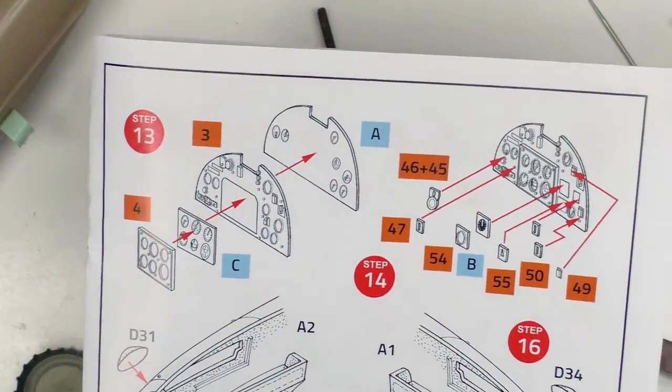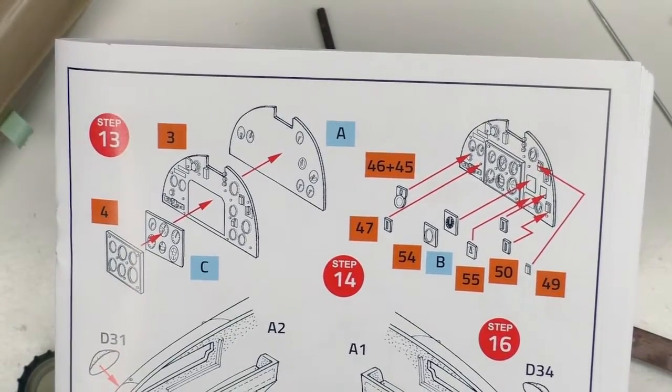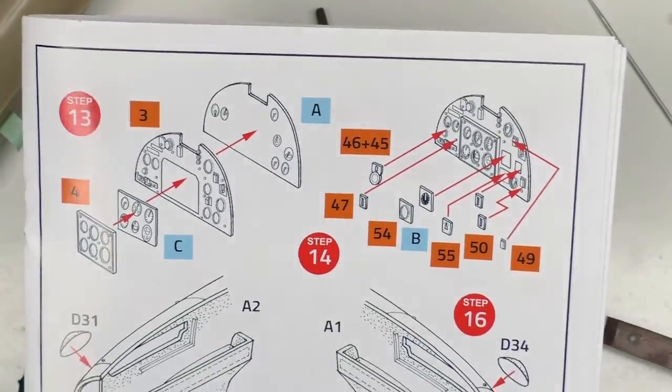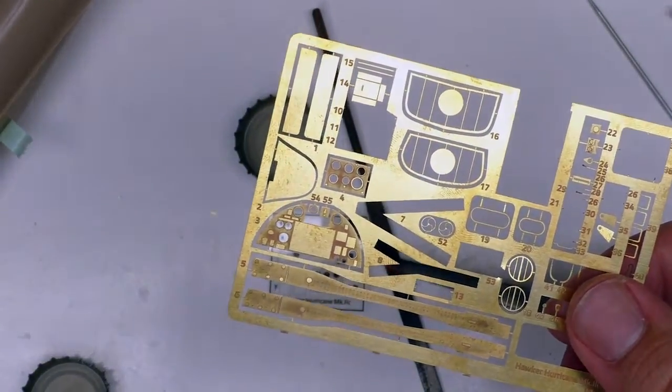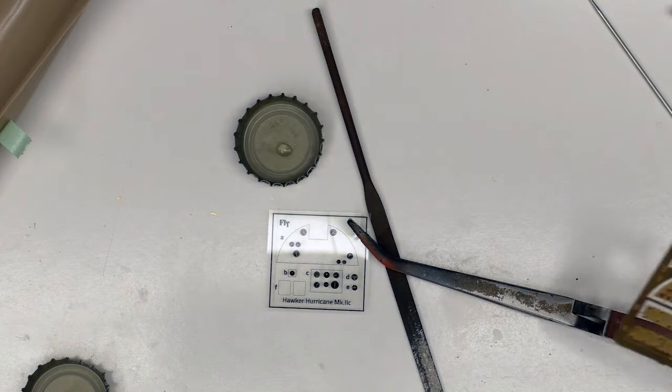Now we start moving into step 13 where we get to play with the instrument panel. Now the instrument panel on this kit is, if you remember, photo etch with acetate gauges.